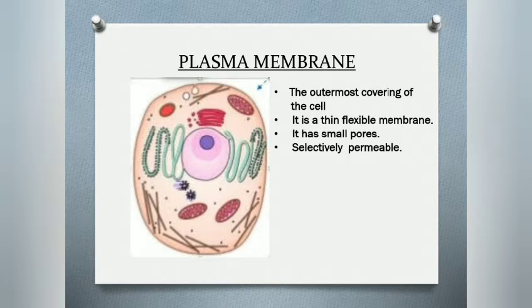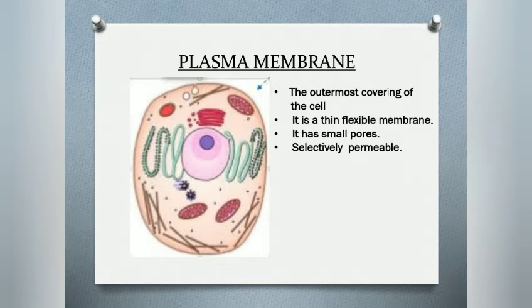The plasma membrane is not a closed structure — it has small pores through which molecules or substances move into and out of the cell. The membrane is described as selectively permeable, meaning the cell membrane allows only certain substances to enter and leave the cell. Therefore it is also called a semi-permeable membrane. The cell membrane does not allow anything and everything to pass through it.